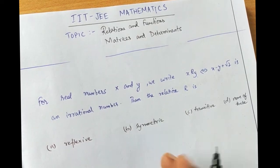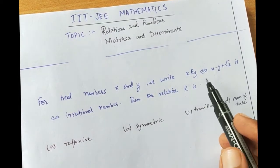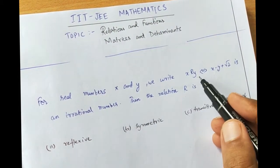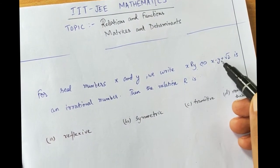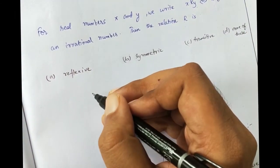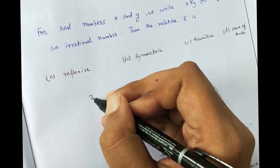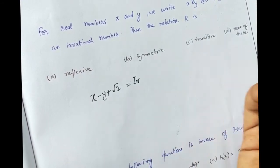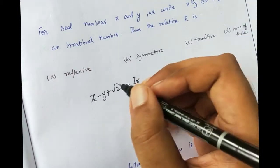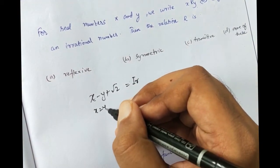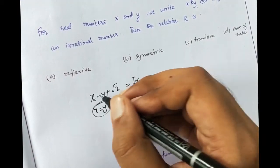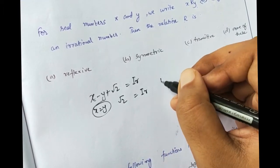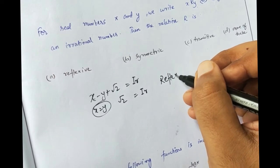For today's first problem, we have a relation problem where there are two real numbers x and y such that x is related to y in the form of x minus y plus root 2 is an irrational number. This is definitely a reflexive relation, because if I put x equal to y, then x and y cancel each other and I get root 2, which is definitely an irrational number. Therefore, the relation is reflexive.